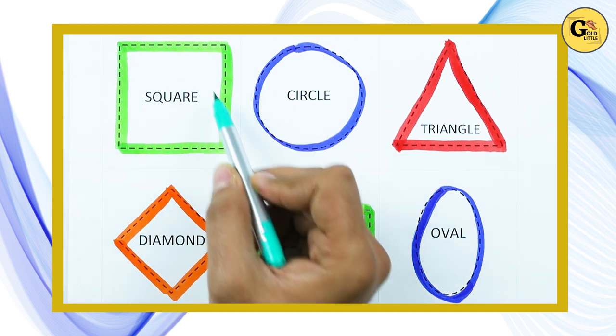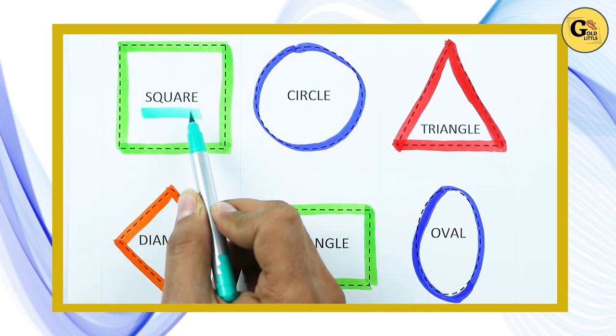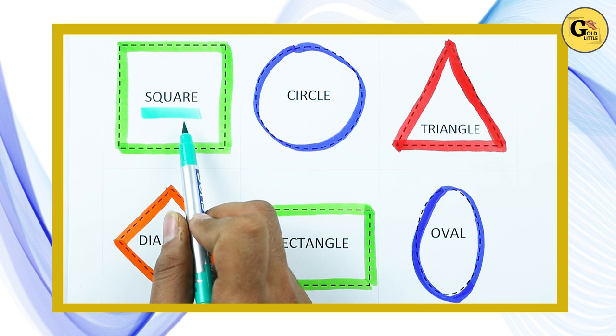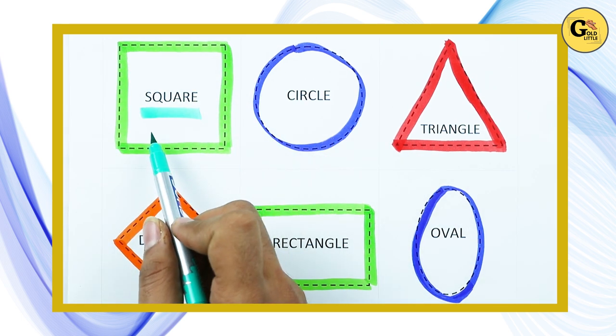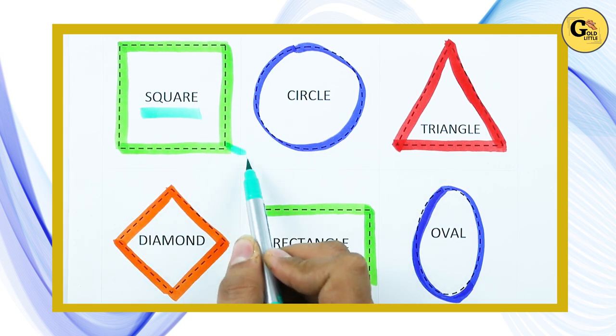Which shape is this? Tell me, square. S-Q-U-A-R-E. It's a square with green color.